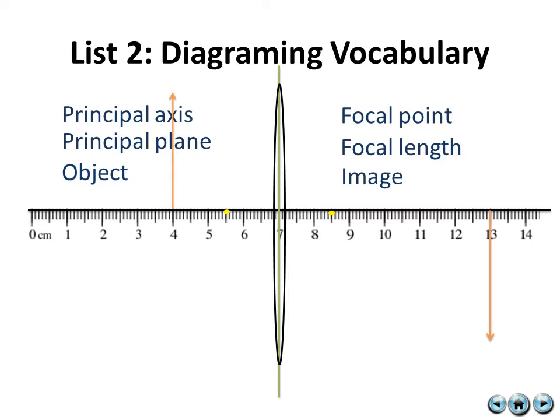In addition, the image can form either on the left or the right of the lens, and that will depend on a number of variables which we'll go into more detail with in a moment. In this presentation, the image will be represented with an orange color to distinguish it from the object.